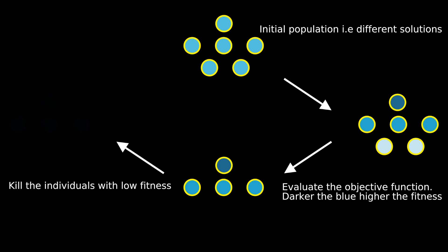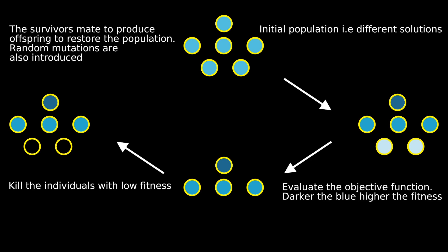The remaining members of the population mate and produce offspring to restore the population. Mating involves mixing the parent chromosomes and obtaining a child chromosome. Random mutations are also introduced in the form of flipping genes at random. This is repeated over several generations.